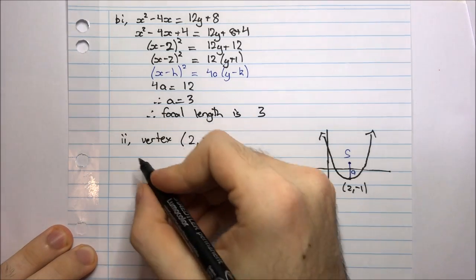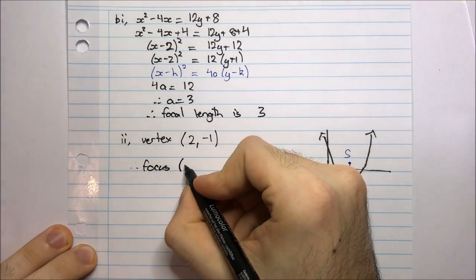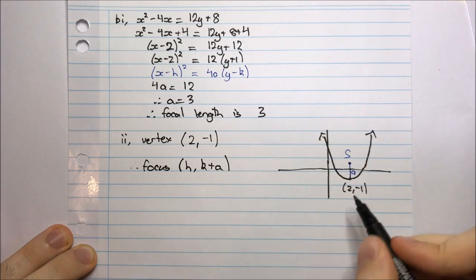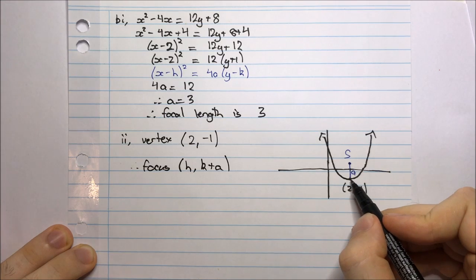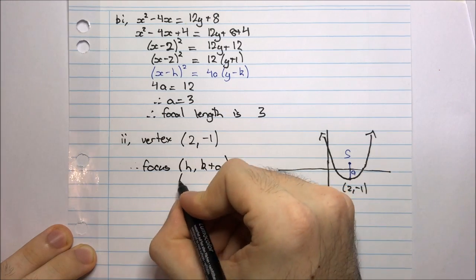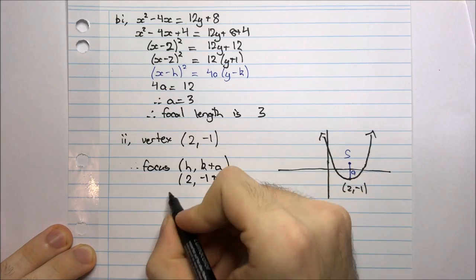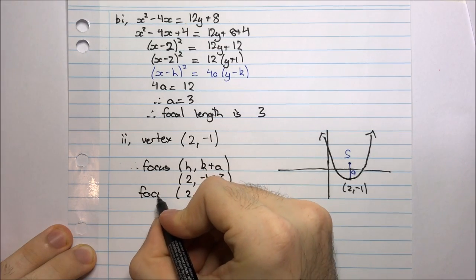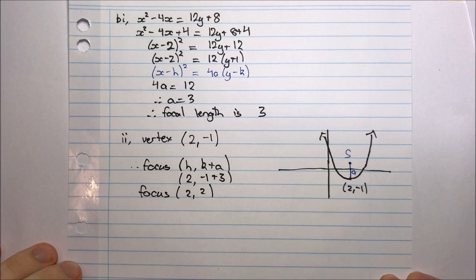The focus is of the form (h, k + a) — I'm just going up a units in the y-coordinate from the vertex. That's (2, -1 + 3), which is (2, 2). So these are the coordinates of the focus, and that completes part b.